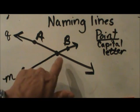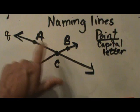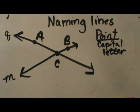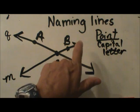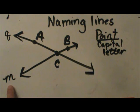Line A, C could either be A, C, C, A, or line Q. This line right here, the lower line, could either be C, B, B, C, or line M.